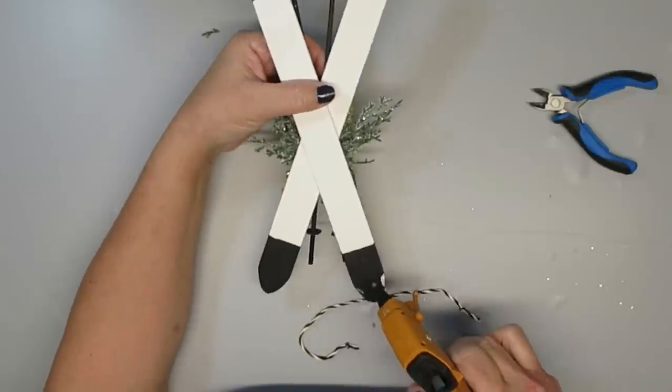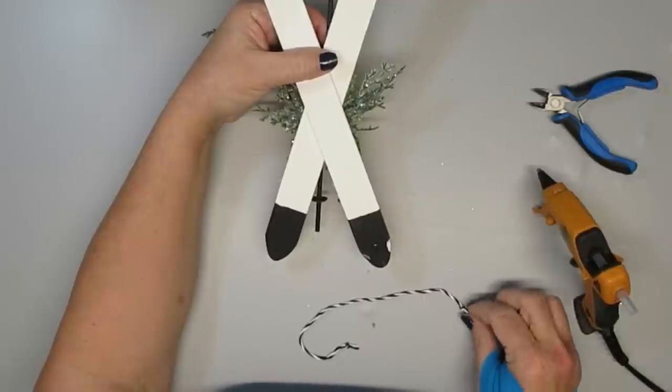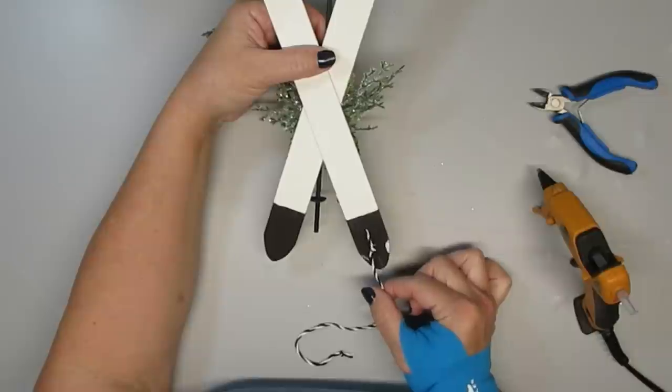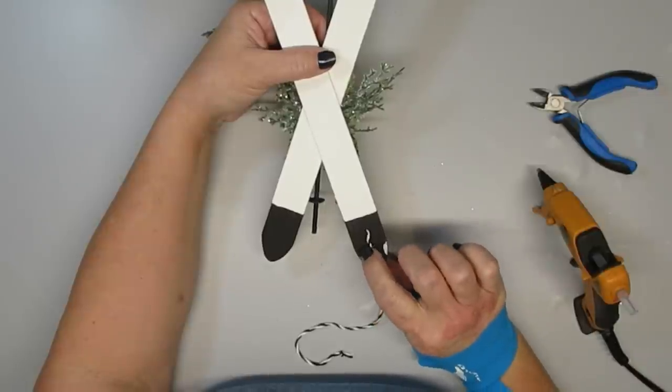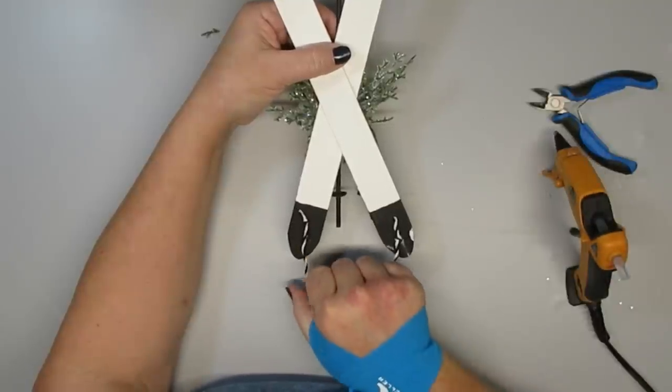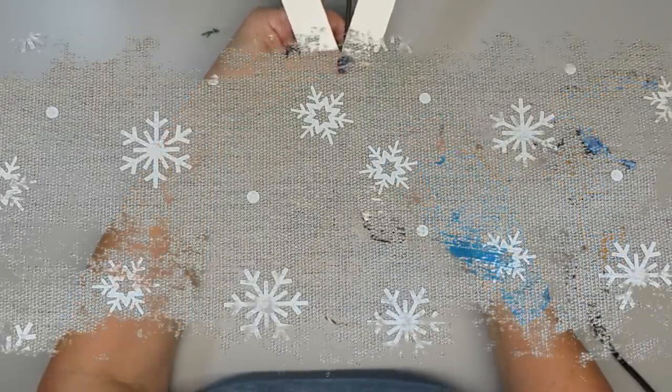You could use these just as decor standing up on a shelf leaning against a wall, or on a tray somewhere. But I decided to just add a little black and white twine because that just gives me the option of hanging it somewhere. I really love how this one turned out and I hope you like it too.